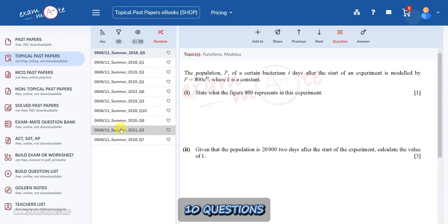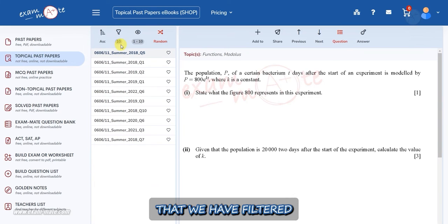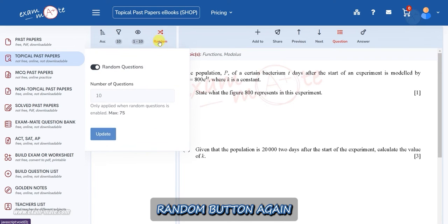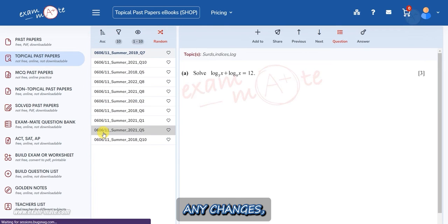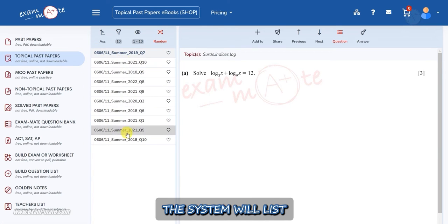Here you can see 10 questions from the 31 questions that we have filtered before, which have been randomly listed for you. If you click on the random button again and click on the update button without making any changes, the system will list 10 new questions for you from the 31 questions you have selected.